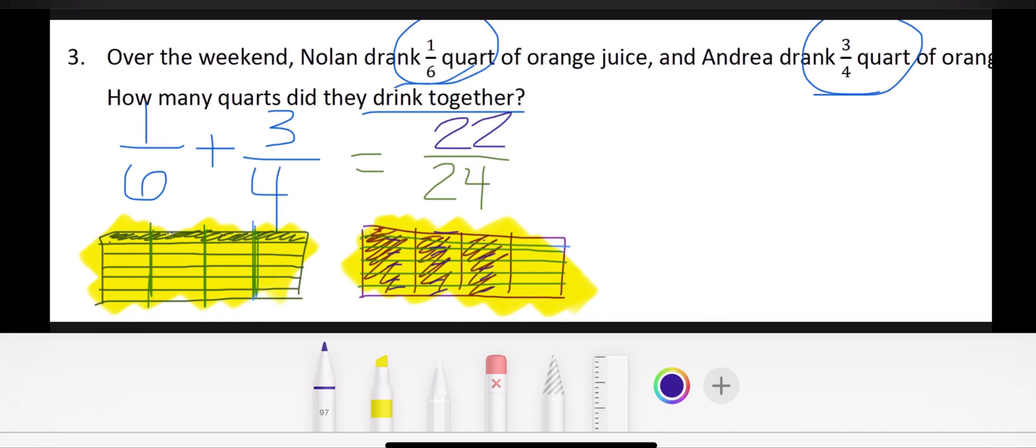I see right away that both my numerator, 22, and my denominator, 24, can go evenly into 2. So remembering those division strategies, 22 divided by 2 is 11, and 24 divided by 2 is 12.